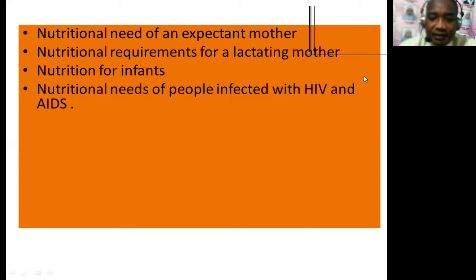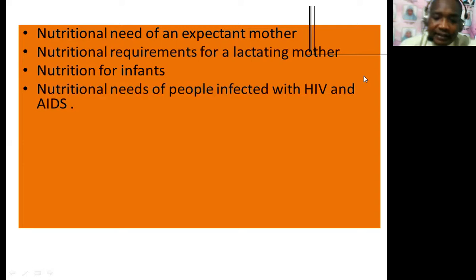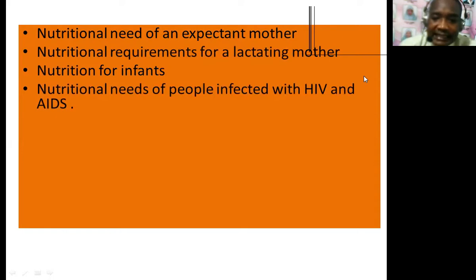Give them fermented milk as it improves digestion. Give coconut oil or milk. Note that cabbages should be given raw or fermented. Raw and cooked garlic, commonly known as kitunguu saumu, stops the increase of HIV and kills other germs.